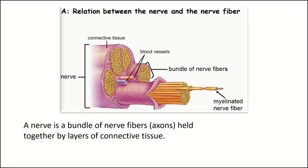Finally, there is the relation between the nerve and the nerve fiber, or axon. The nerve is a bundle of nerve fibers held together by layers of connective tissue. As you can see, these are the bundles of nerve fibers held together by connective tissue. So the nerve is simply a bundle of nerve fibers held together by layers of connective tissue.